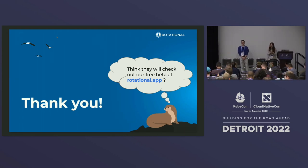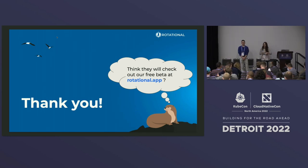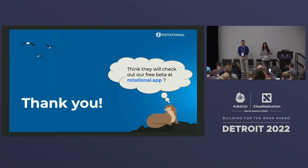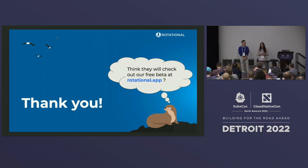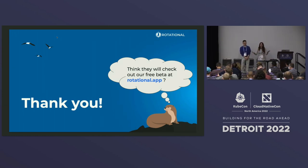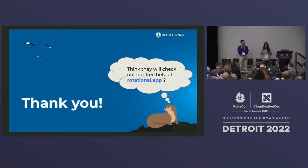Great question — why did we build our own distributed database instead of a readily available commercial solution? The reason is that commercial solutions are super expensive. We're working for a nonprofit, and they don't have the money to spend on Aurora or Spanner. To shell out money for Spanner is way beyond most people's operating budgets, especially now.